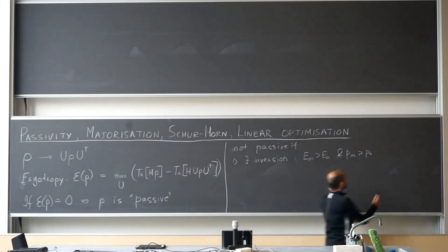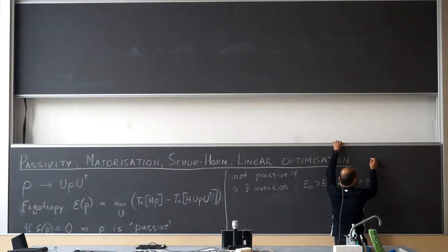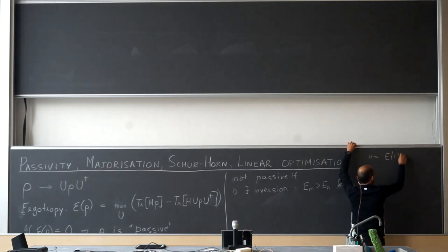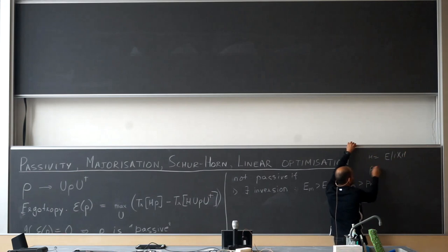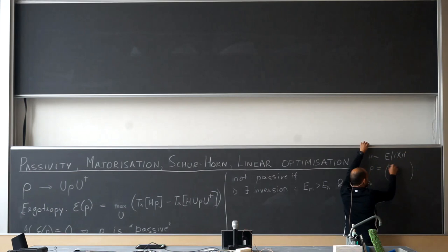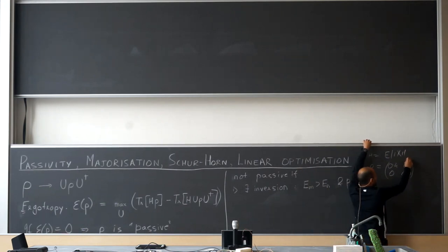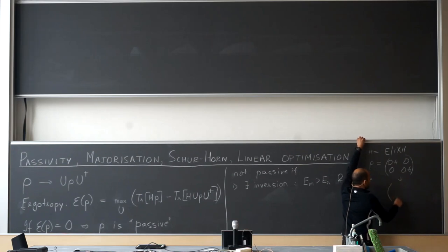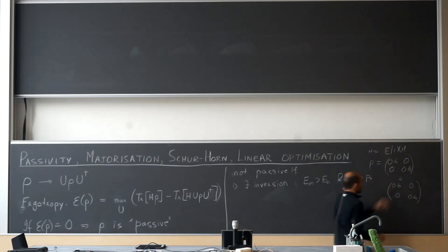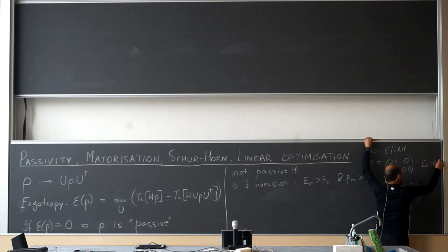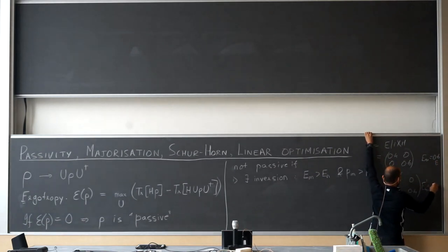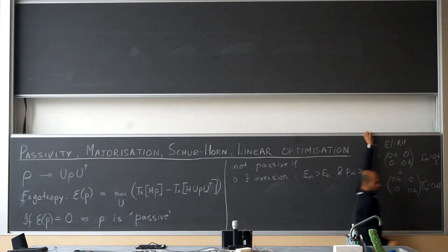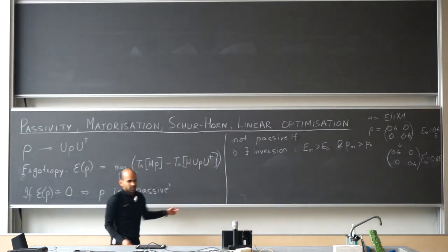We can see this very simply with a qubit example. Take the Hamiltonian E|1><1| on a qubit, and a state rho which is diagonal with entries 0.4 and 0.6 — more population in the high energy state |1> than in |0>. If I do a unitary that just swaps |0> and |1>, making it 0.6 and 0.4, this has a lower average energy: E_average = 0.6E becomes E_average_prime = 0.4E. So if you have a population inversion, it definitely cannot be passive; there's a very trivial unitary that will do it.